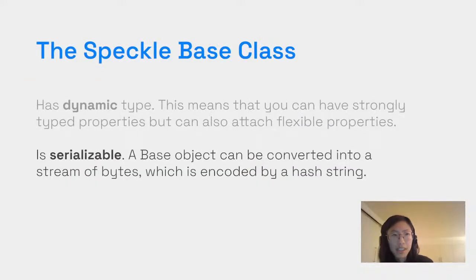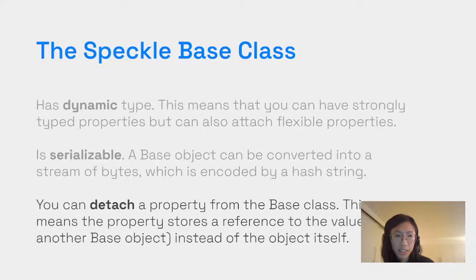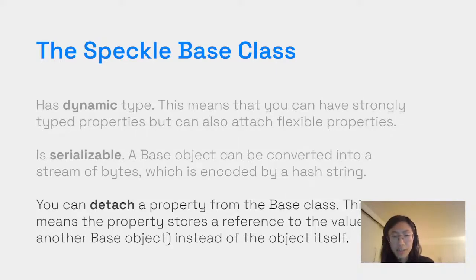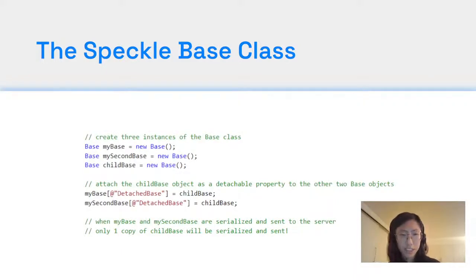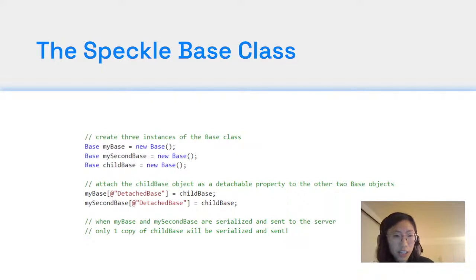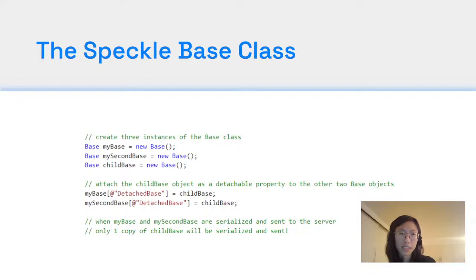The Speckle base class is also serializable — the object can be converted into a stream of bytes encoded by a unique hash string. You can also detach properties from the base class, meaning the property stores a reference to the value rather than the object itself. For example, if you create three base class instances and attach a child base object as a property to two of them, when sent to the server only one copy of the child base object is serialized — this boosts performance.